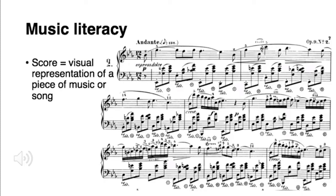The first step in studying music theory is learning how to read and write music - translating sounds into graphics. There are many ways to notate music, just like there are many alphabets in the world. We'll focus on Western classical musical notation, which has become standard throughout the world. The visual representation of a piece of music is called a score, and all of these symbols tell the performer which sounds to produce and how to produce them.